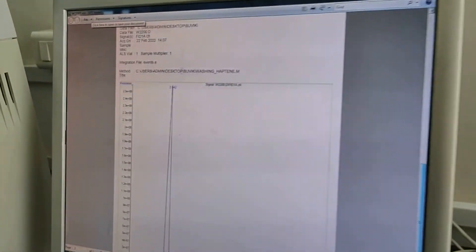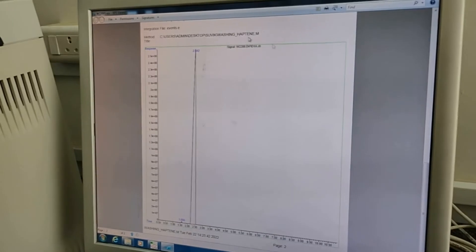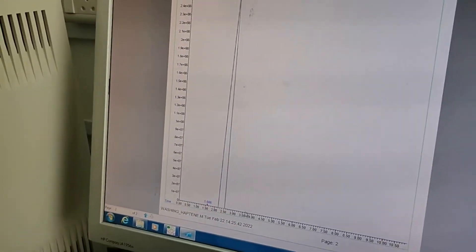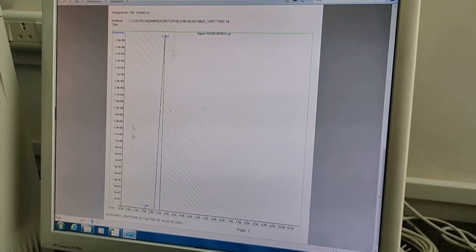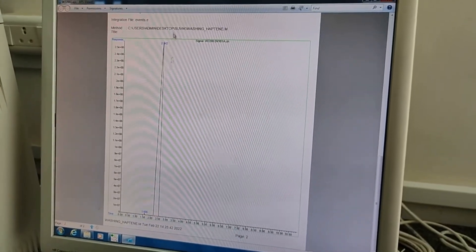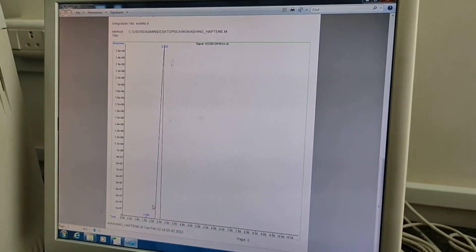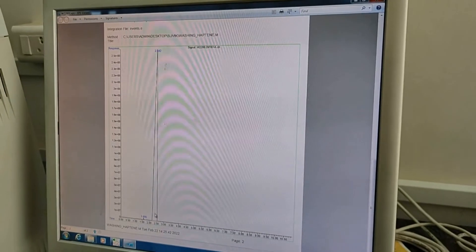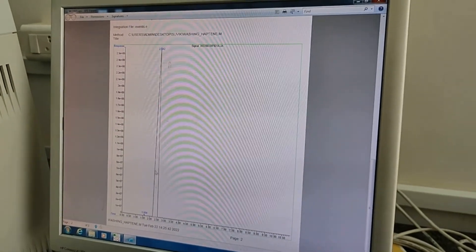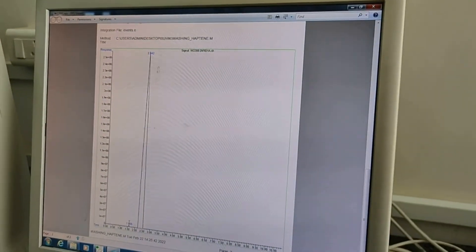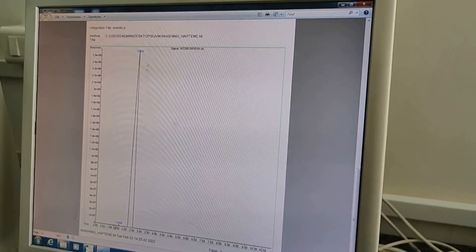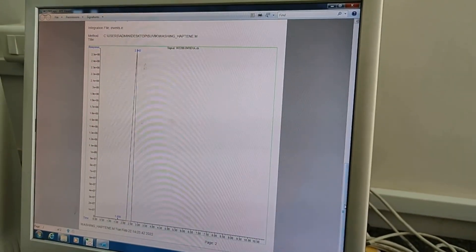Now in the graph point of view, this is the graph is generated. In the X-axis time is indicated, the retention time, and the Y-axis is the response time. Now this big peak is indicating which component is available. Here we have sample using the methanol, so the methanol peak is here, and the other impurity traces in the methanol sample. I don't know which, but here the detector so that I can find out which traces is available in the component.